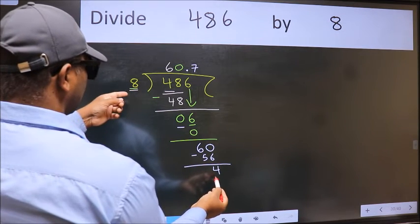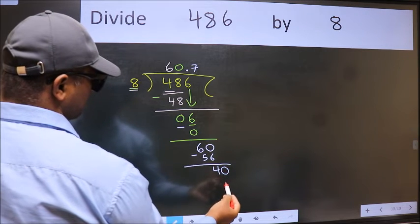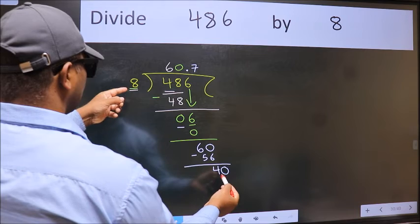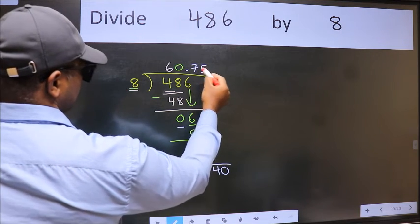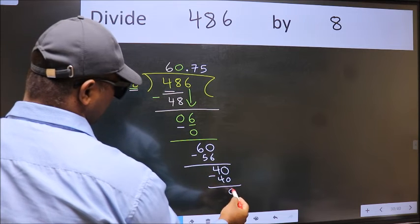4 is smaller than 8. We already have the decimal, so directly take 0. 40. When do we get 40 in the 8 table? 8 times 5 is 40. Now we subtract. We get 0.